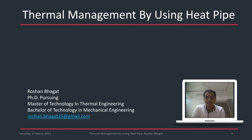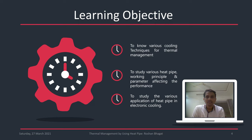Thermal management using heat pipe technology involves conventional heat pipes and pulsating heat pipes. These devices are used for transferring heat within short distances. We will see in detail how these devices are used for thermal management of electronics, as well as some other methods for cooling. The learning objectives are to know various cooling techniques for thermal management, to study heat pipe working principles and parameters affecting performance, and to study the applications of heat pipes in electronic cooling.